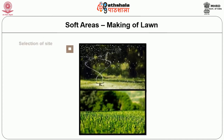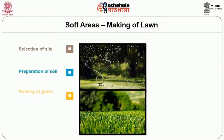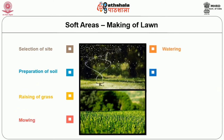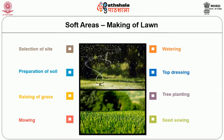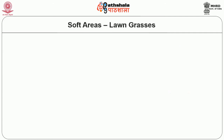Lawn making involves the following main steps: selection of site, preparation of soil, raising of grass, mowing, watering, top dressing, tree planting and seed sowing.